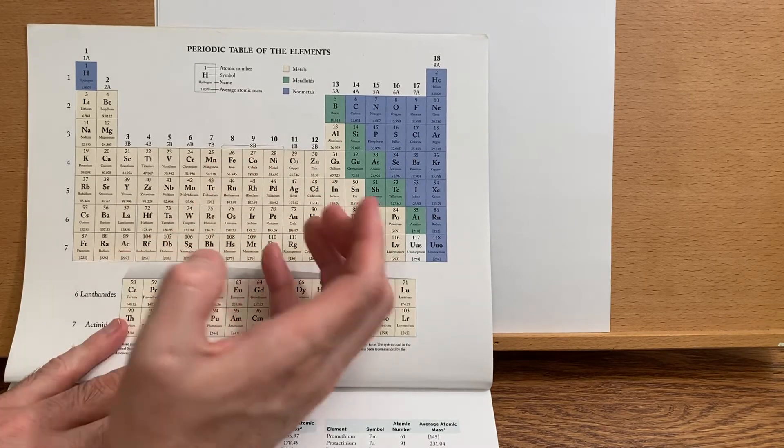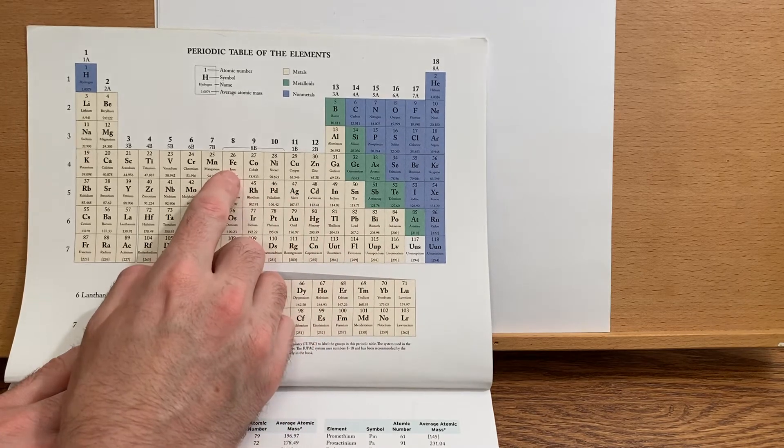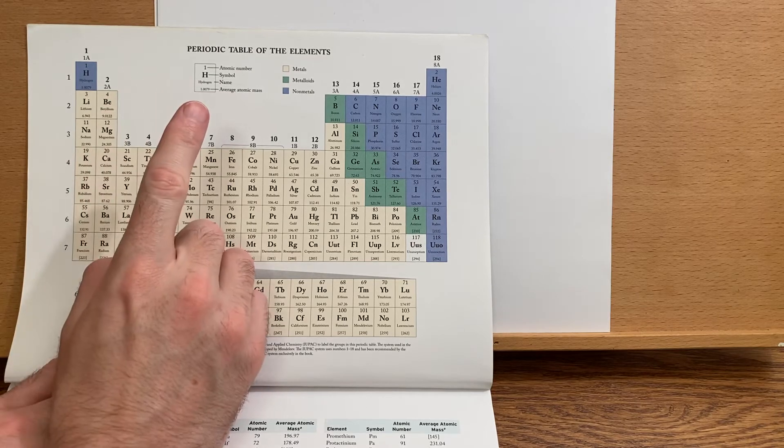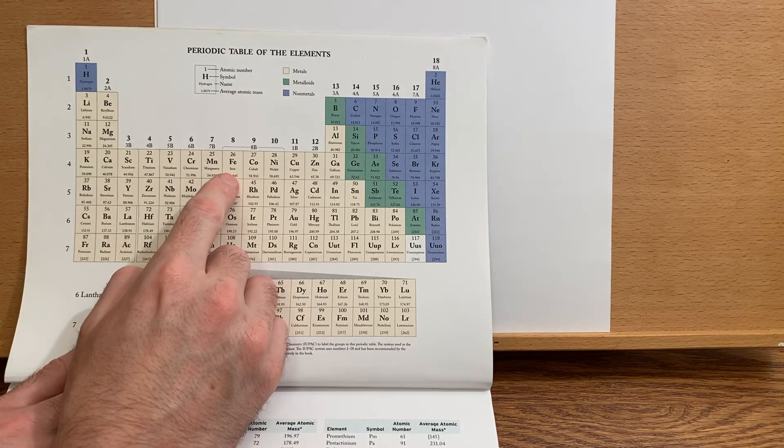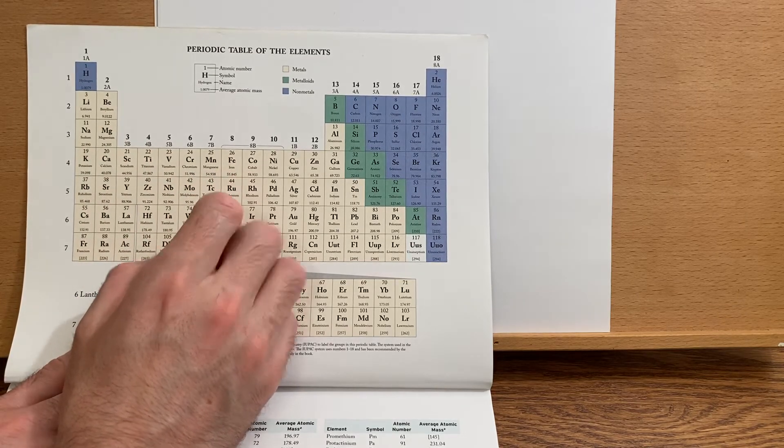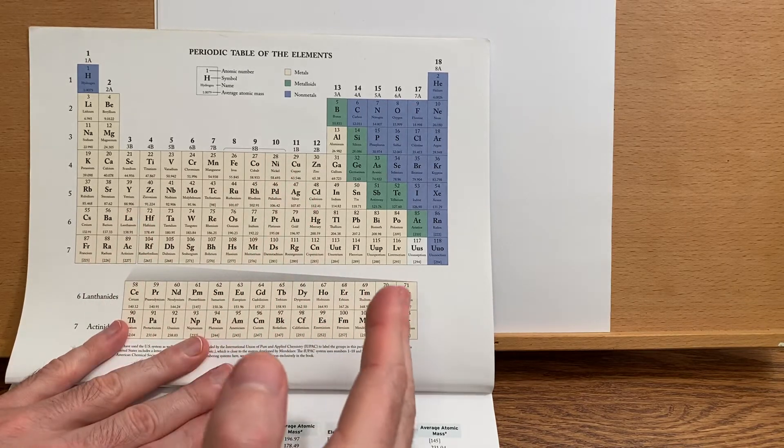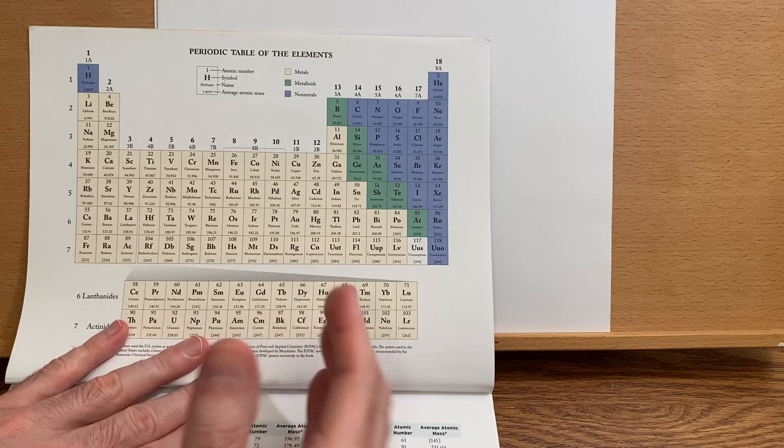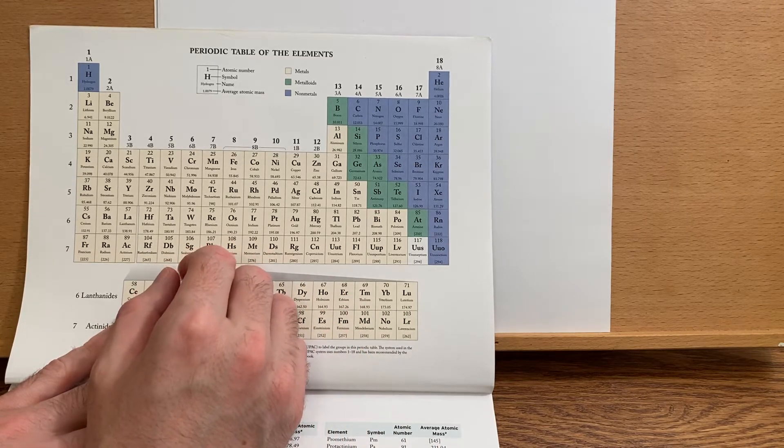Now if we went to iron 3 plus, we would lose the two 4s electrons and one 3d electron, which would bring our configuration to 3d5. We went from 6 down to 5 because we had to lose one d electron.